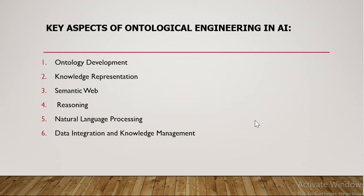Next is the Semantic Web. Ontology plays a fundamental role in making web content machine-readable and understandable by both humans and machines. For example, consider an addition problem: if we ask a human what 2 plus 2 is, they will answer 4. Similarly, if we input 2 plus 2 into a machine — like a calculator on our laptop — it also gives 4. This illustrates the fundamental role of ontology in making content machine-readable and understandable by both humans and machines.